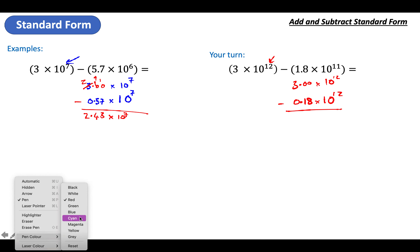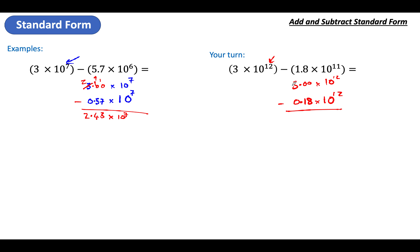I'm going to steal from all the way over here to make 10. Steal again to make 10. 10 take away 8 leaves 2. 9 take away 1 leaves 8. 2 take away 0 is 2. Times ten to the power of 12. The powers don't change. Getting the idea?